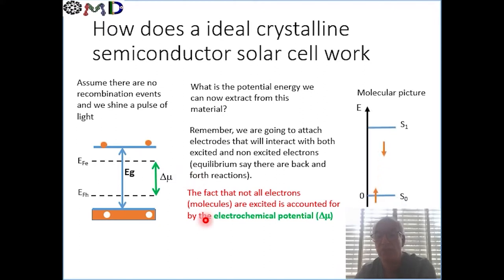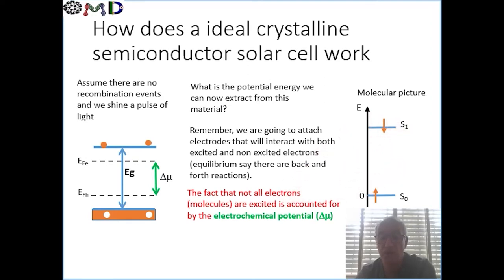And if we want to think of the molecular picture — where we have a molecule in the ground state and the excited state — the energy we can extract from an ensemble of molecules where not all of them are in the excited state would be the chemical potential of the system.